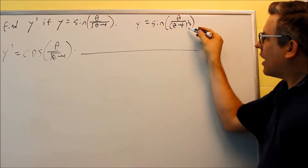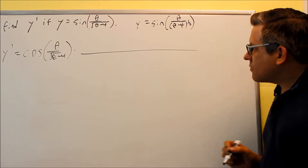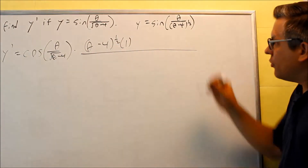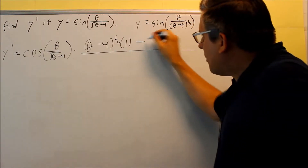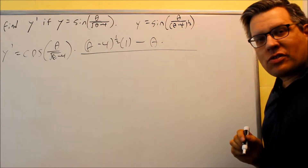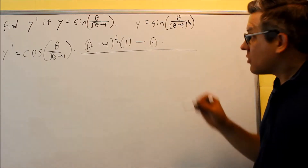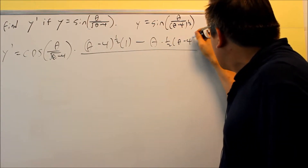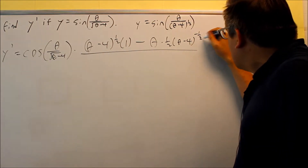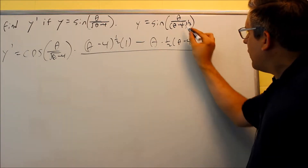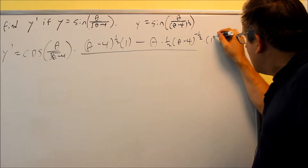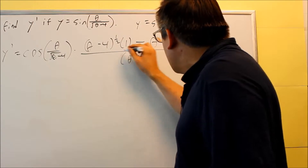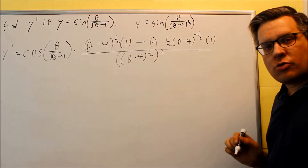I'll be using the form rewritten with the one-half power. The quotient rule gives us: bottom times derivative of the top — theta minus 4 to the one-half times the derivative of theta, which is 1 — minus the top, which is theta. Now for the derivative of the bottom, I apply the chain rule: the one-half comes down, theta minus 4, subtract 1 from the power to get negative one-half, and multiply by the derivative of theta minus 4, which is 1. The bottom of the quotient rule is theta minus 4 to the one-half, squared.